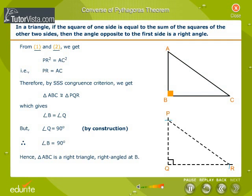Hence, triangle ABC is a right triangle, right-angled at B. Thus, the theorem is proved.